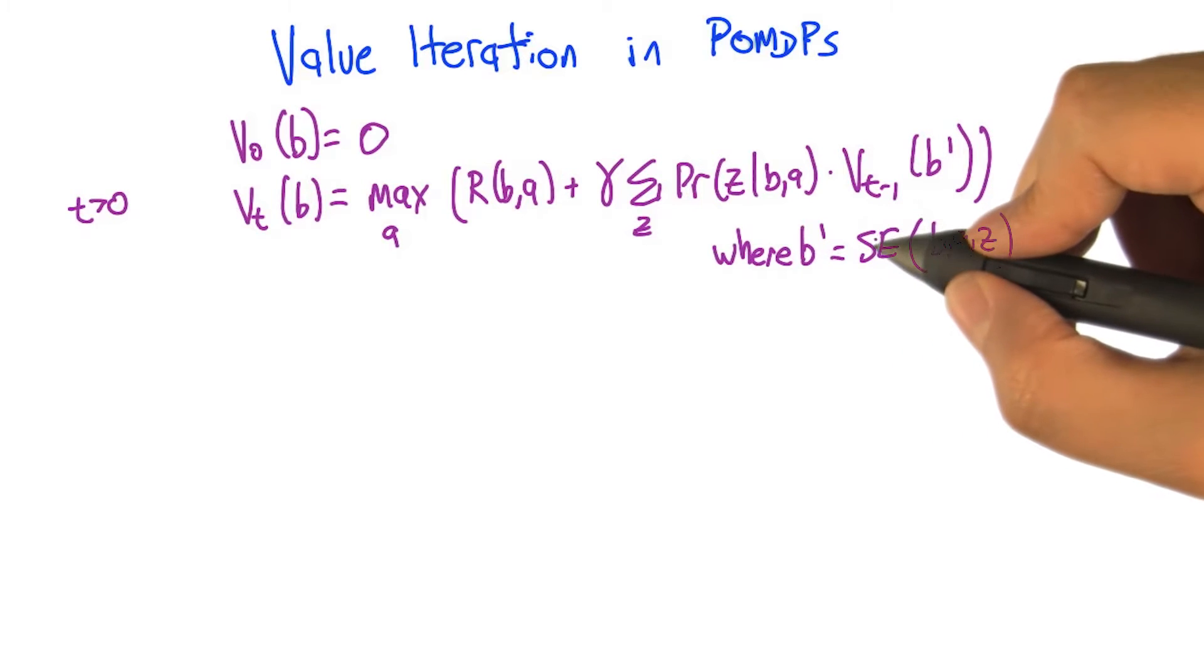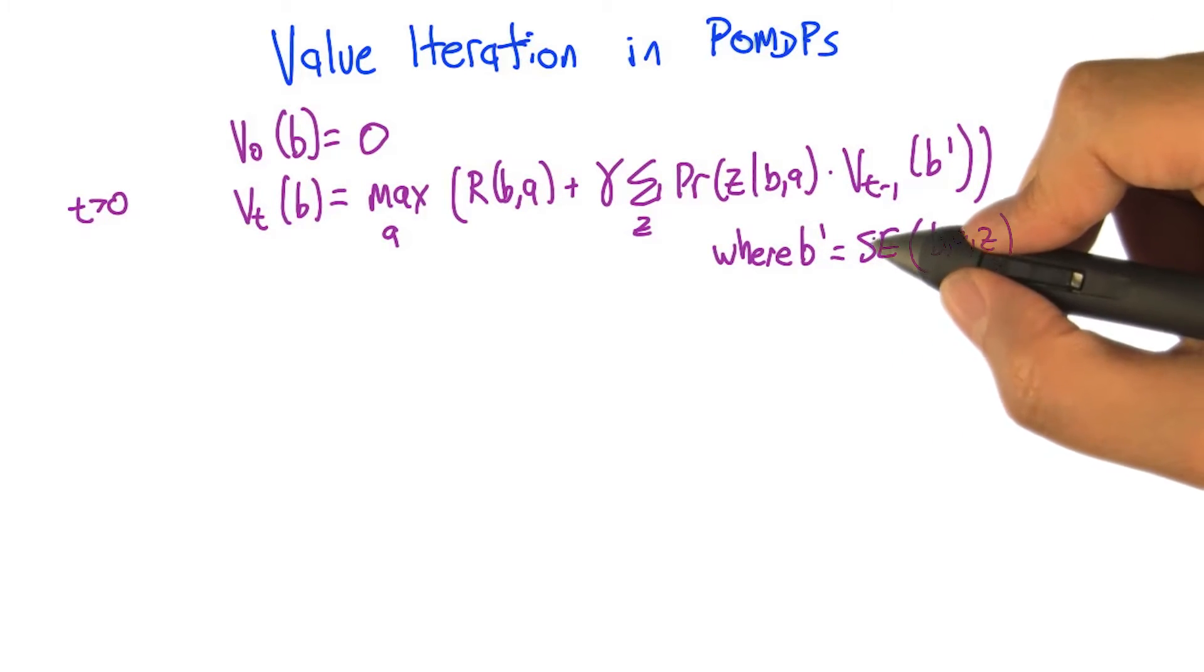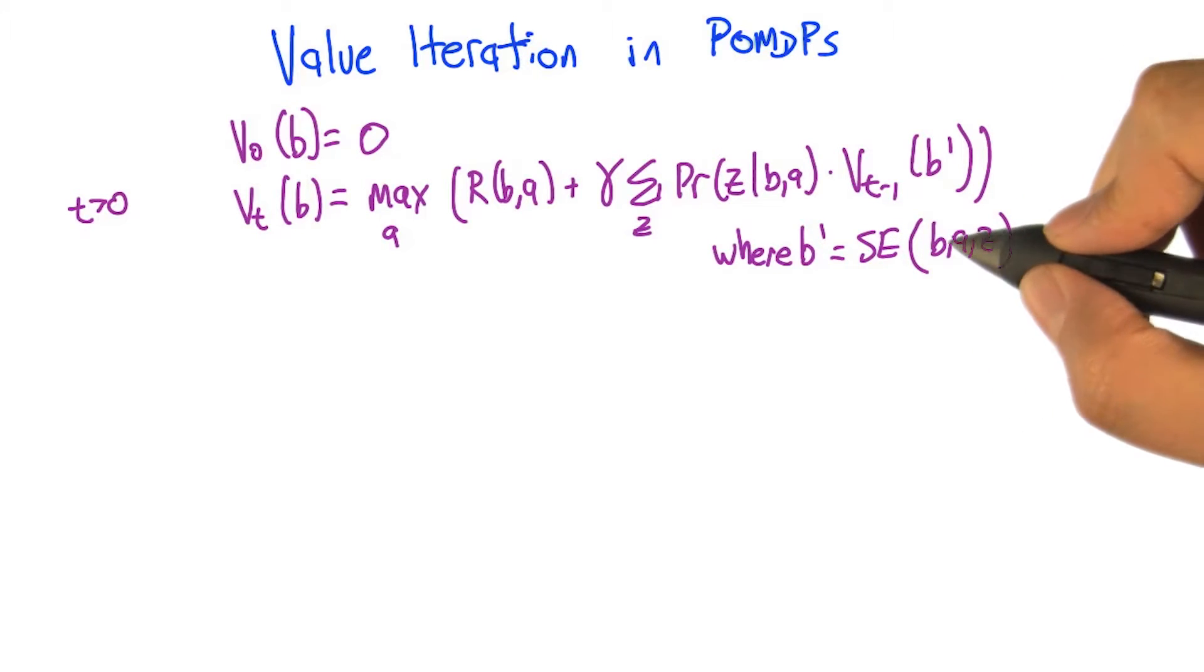which is what we get by doing what we talked about on the previous slide, which we'll call the state estimation for b, a, z. All right, that seems reasonable.